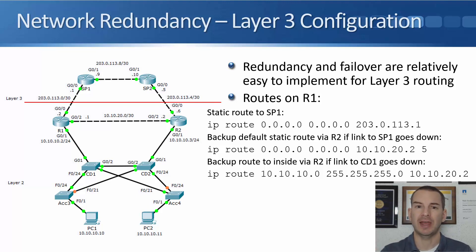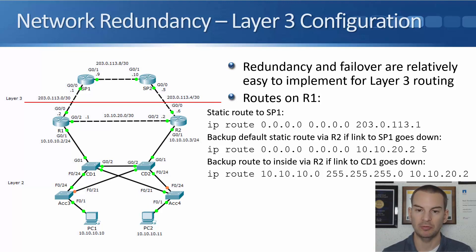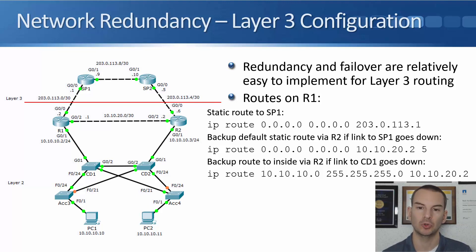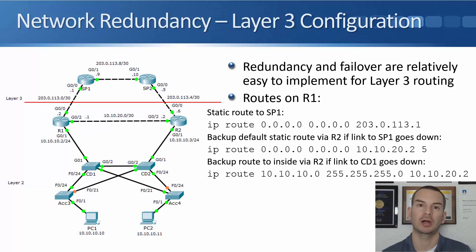We want redundancy in case SP1 or the link to it goes down, so we have a backup route pointing to R2. If connectivity to SP1 goes down from R1, we can send traffic to R2, which will then send it up to SP2. The backup route is also a static default route: 0.0.0.0 0.0.0.0 with next hop R2 at 10.10.20.2. We give it a higher administrative distance of 5 because we don't want to load balance — we want traffic to always go directly to SP1 unless that goes down, then send it to R2. The way to make SP1 the preferred route is by manipulating the administrative distance.